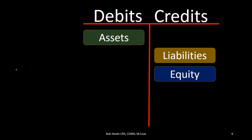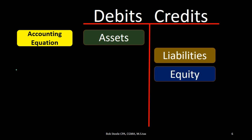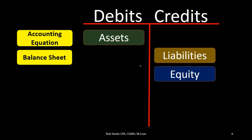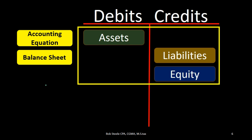You might notice this looks like the accounting equation: assets on the left equal liabilities and equity on the right — and the balance sheet works the same way. So if you just learn that assets have a normal debit balance and liabilities and equity have a normal credit balance, that's a good start and a useful cheat sheet.